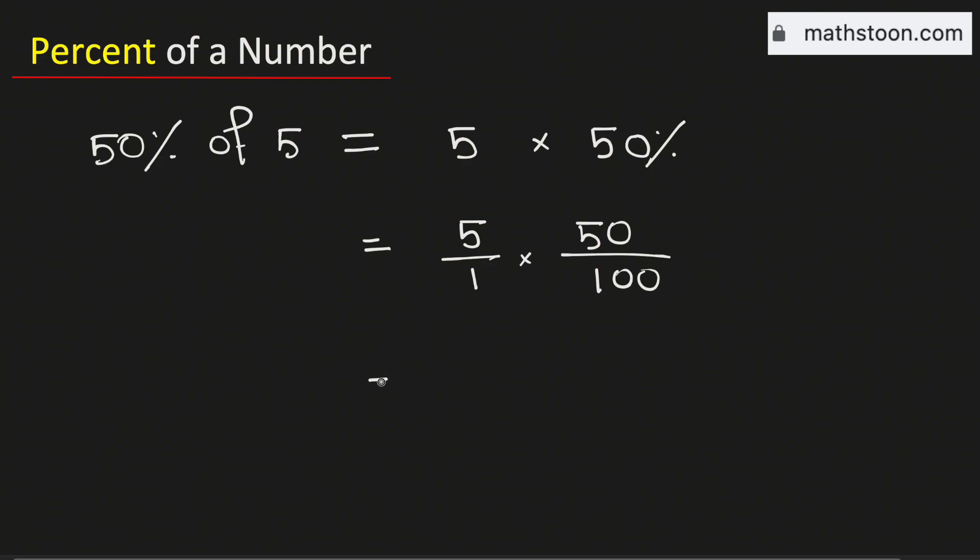Now if we multiply the numerators we will get 250. And in the denominator we have 1 times 100 which is 100.